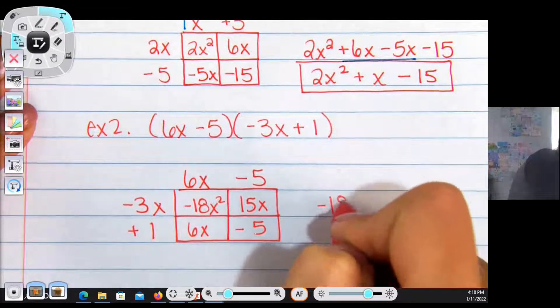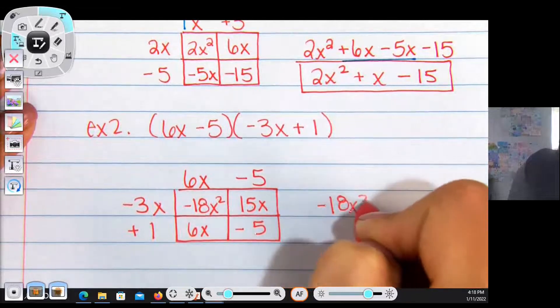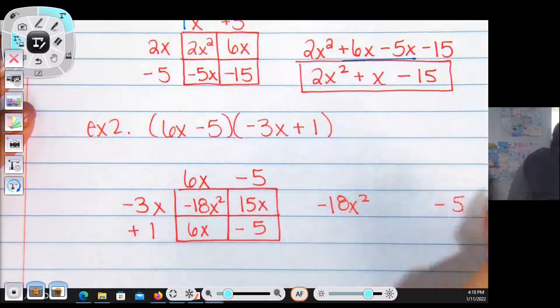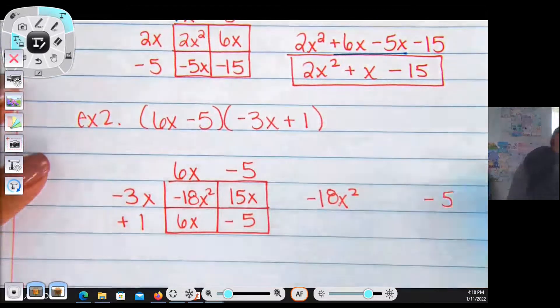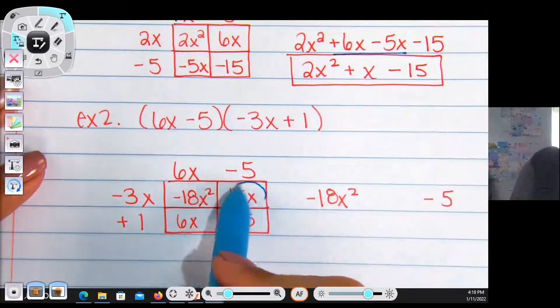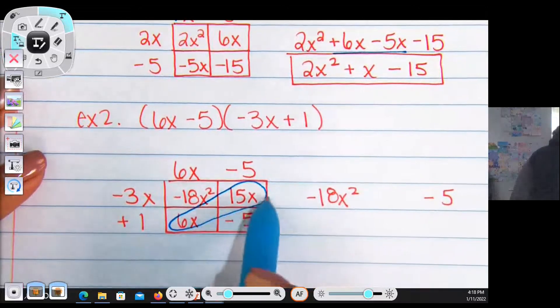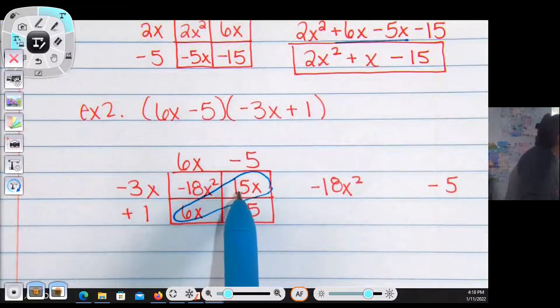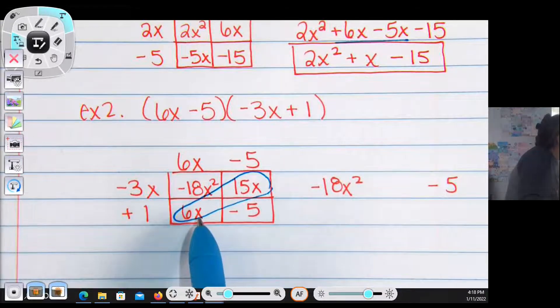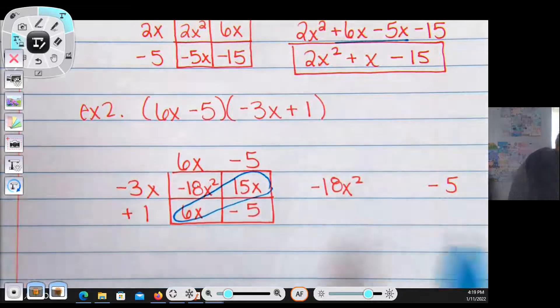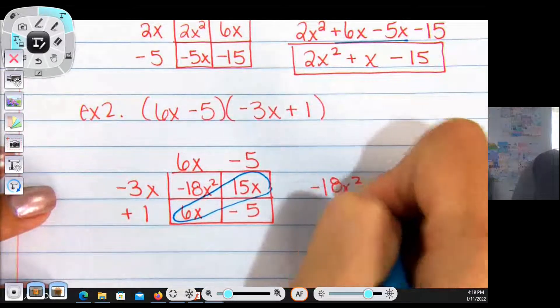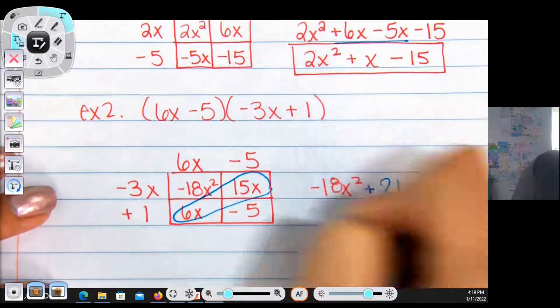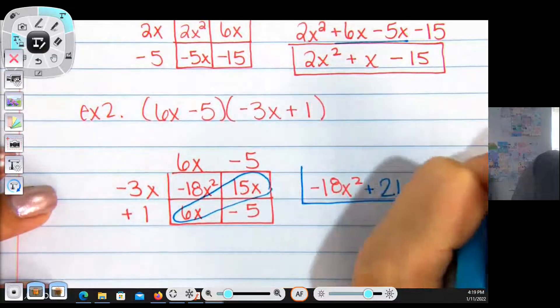The first term is always going to be the first box, negative 18x². The last term is always going to be the last box. What you're going to learn to do is, you could write it all out like we did in the previous example. You could just combine these like terms as you go instead of writing it all out. This 15 is positive, this 6 is positive, they're going to add together to make 21x. Since it's positive, I'm going to put a plus sign in front of the 21, and that is your answer.